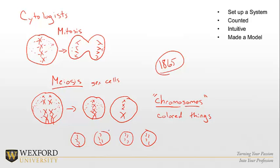Cytologists noticed that chromosomes split into pairs during meiosis — the process that makes sex cells — and those sex cells define the offspring. That sounded a lot like what that dead monk had written about in 1865. All of a sudden there was a huge resurgence in Mendel's work. His model had been just a theory with nothing tangible, but now scientists could see these chromosomes lining up in pairs when making sex cells.